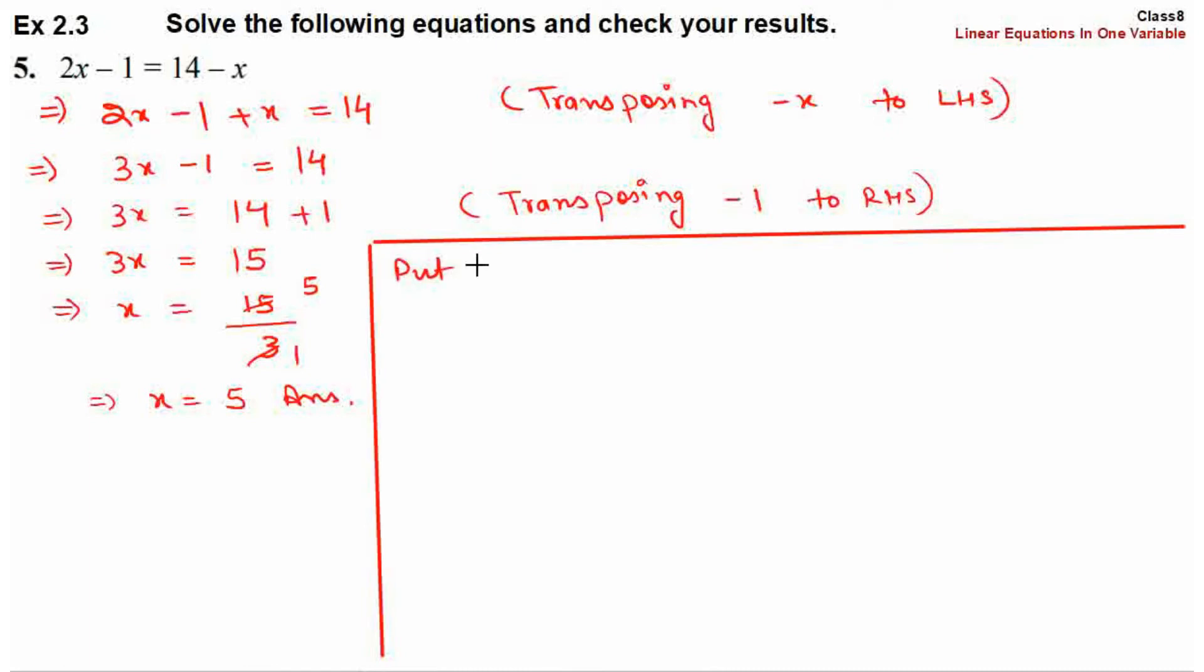Put x equals 5 in the left hand side and right hand side. Left hand side equals 2x minus 1. This equals 2 into 5 minus 1, which is 10 minus 1, equals 9.